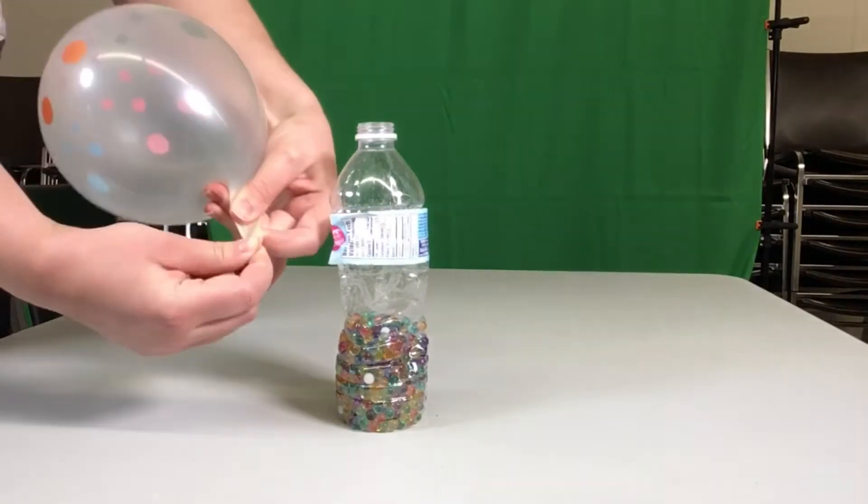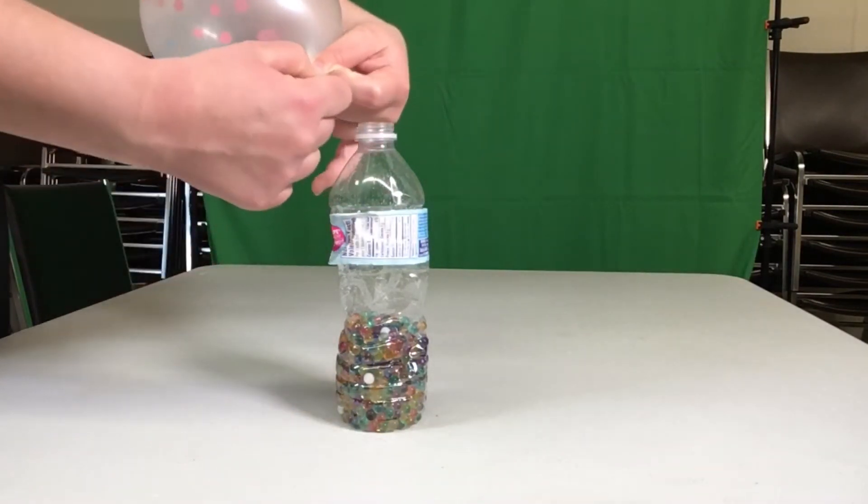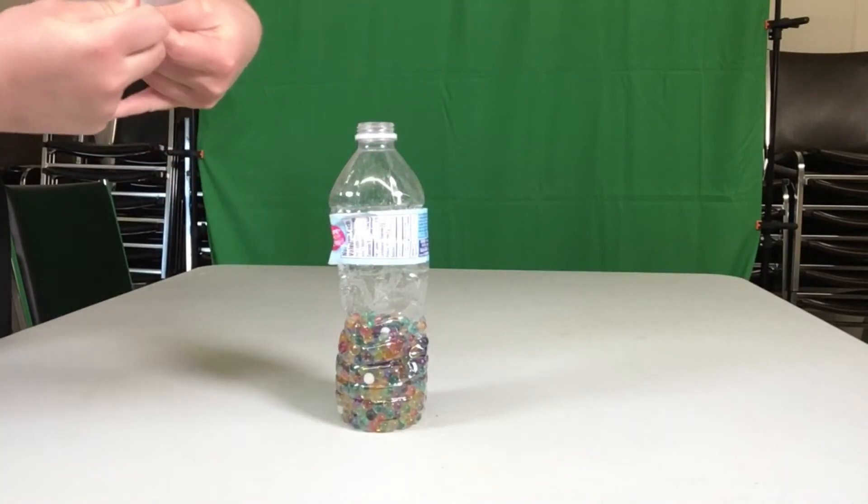For the next step keep the neck of the balloon pinched so the air won't get out. Then stretch out the mouth of the balloon over top the opening of the water bottle.